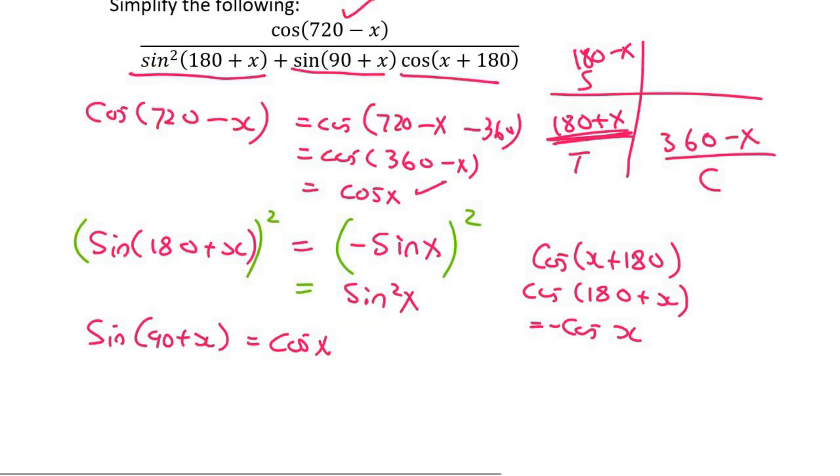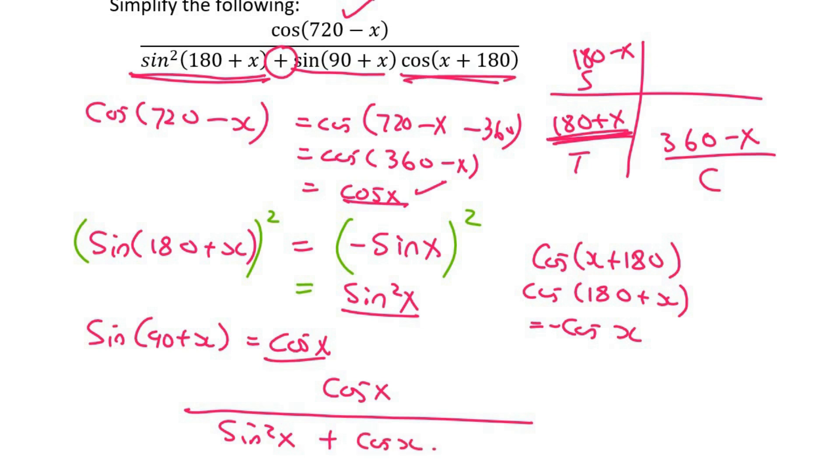Now we can go fill everything in. At the top, we have cos(720 - x), which became cos x. Then this part became sin²x. Then there's a plus. Then the sin(90 + x), that became cos x. And then the cos(x + 180) became a negative, so I must put a multiply sign and then a negative cos x.